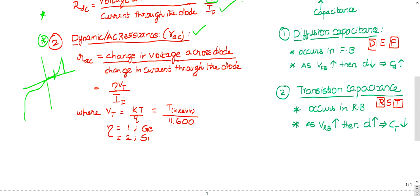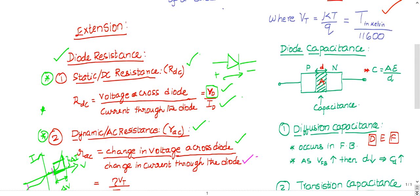From the V-I characteristics of the diode, the slope from one instant to another — that is, change in voltage divided by change in current — is defined as the dynamic resistance of the diode. The formula is η·Vt / Id. Vt is T/11600 in Kelvin, as already discussed.